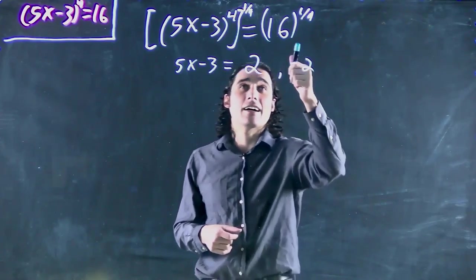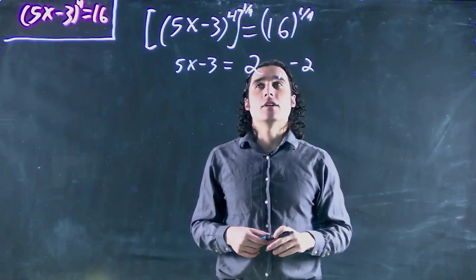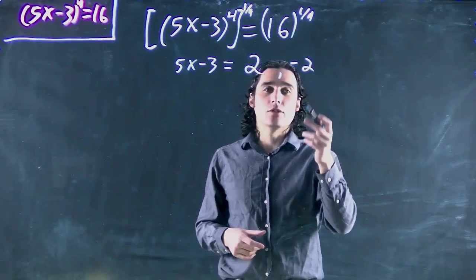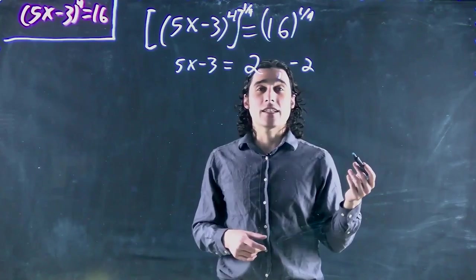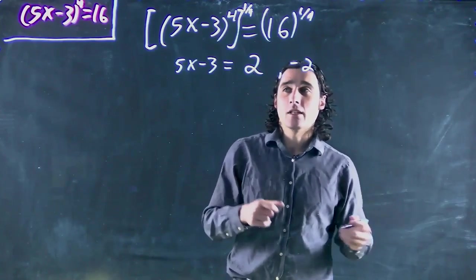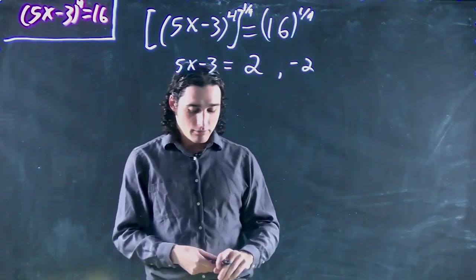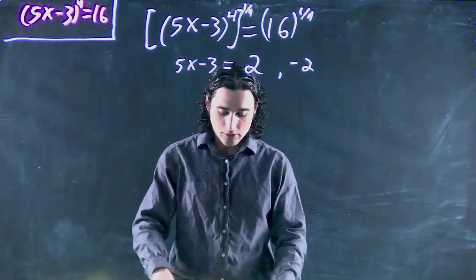Remember when we have the even root of a function, we actually end up with two solutions. So in this case, we're actually going to have to solve both. So we end up branching out and getting two possible scenarios.